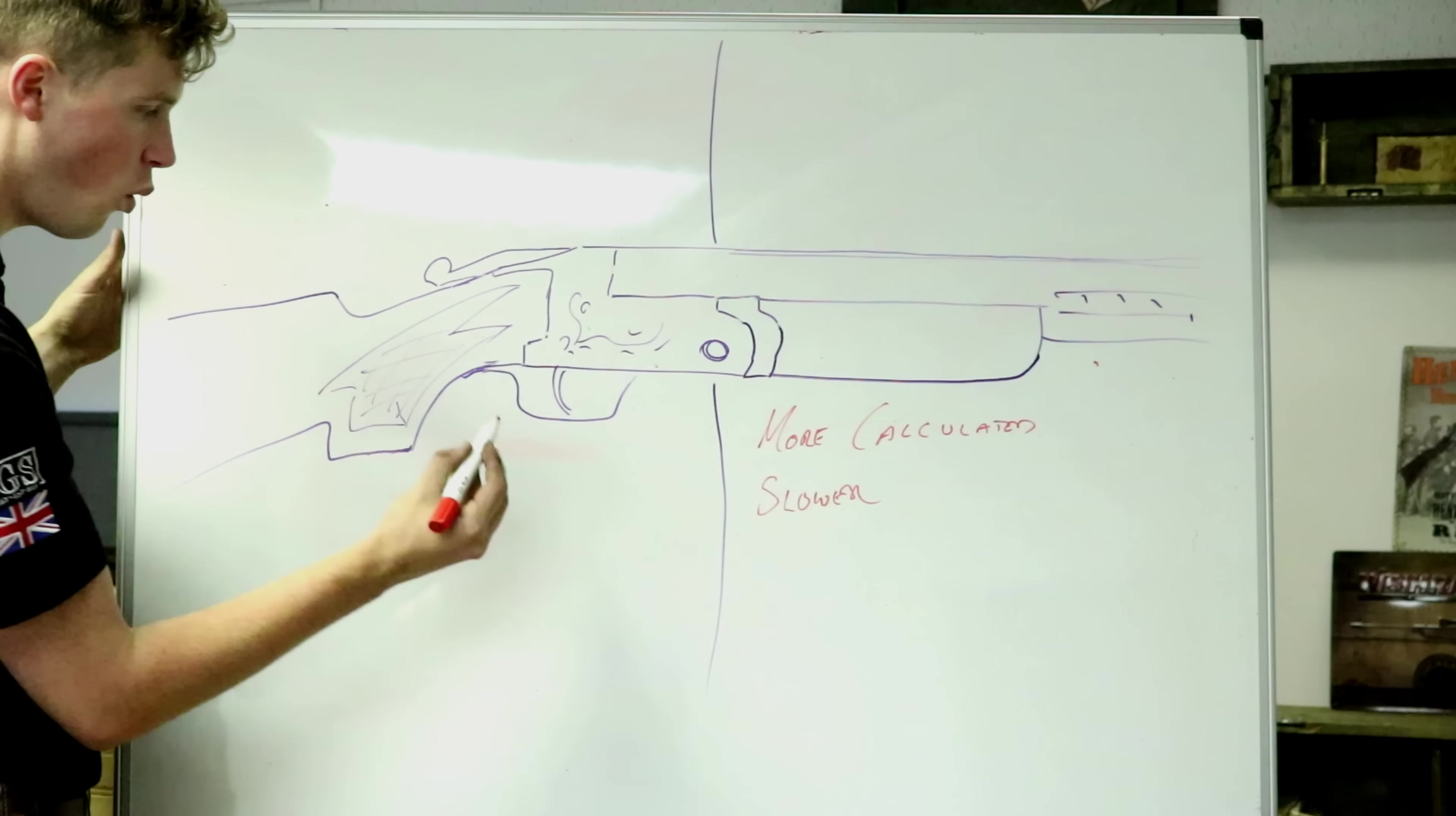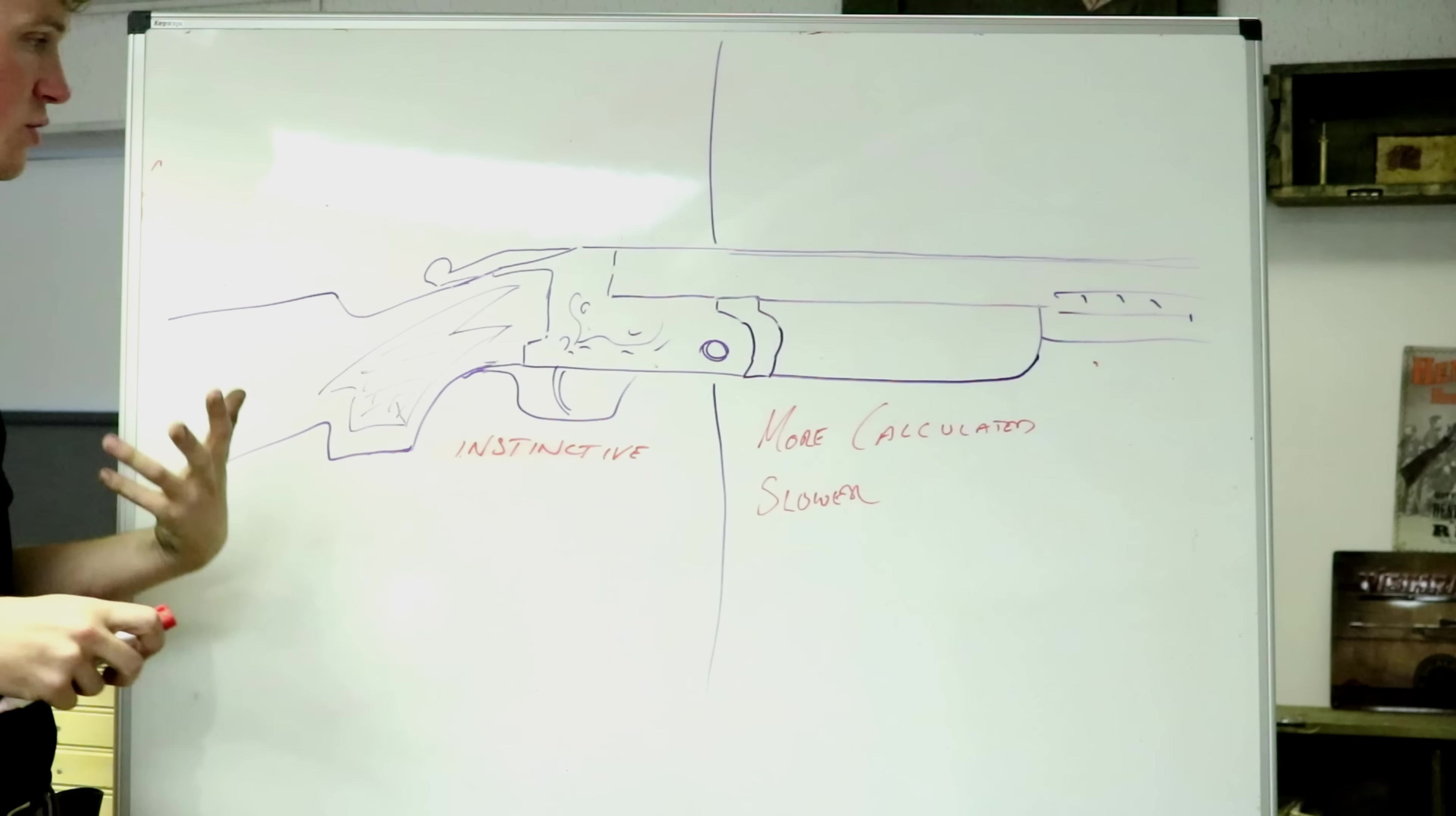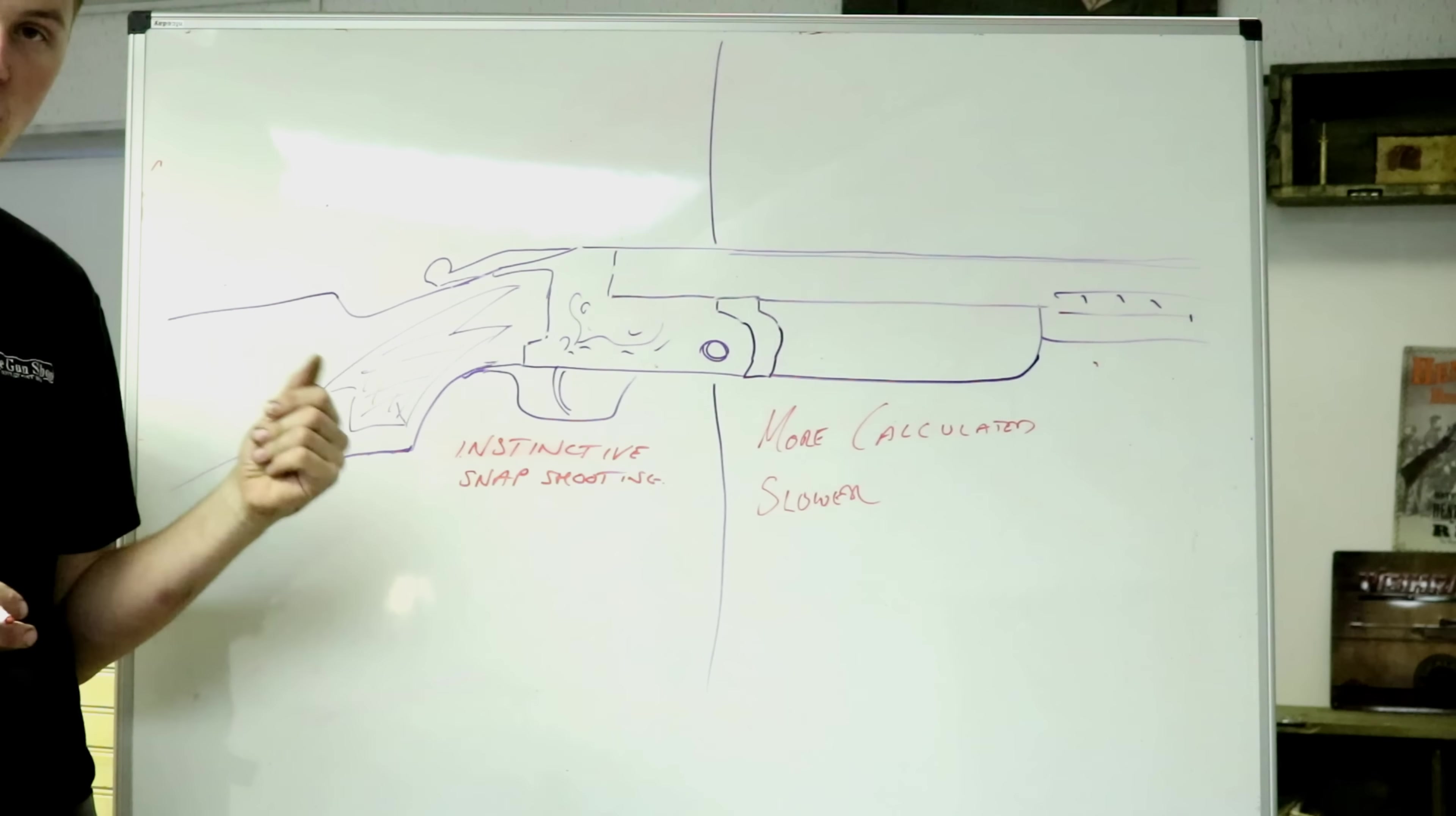So talking a couple of points about a rear heavy gun, a rearward balance gun, they are more instinctive. The fact that a rear heavy gun will rotate that much faster around its axis will mean that you can get that gun on target that much quicker. And for somebody who shoots instinctively or needs to take a snapshot, a rearward heavy gun will lend itself to that. You can just get those barrels to where you need them that much quicker.